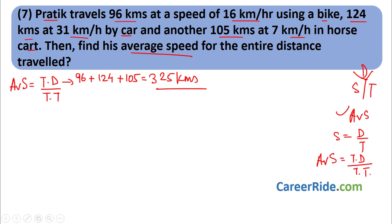Total distance = 96 + 124 + 105 = 325 km. For total time, find time taken for each leg using Time = Distance ÷ Speed. T1 (bike) = 96/16 = 6 hours. T2 (car) = 124/31 = 4 hours. T3 (horse cart) = 105/7 = 15 hours. Total time = 6 + 4 + 15 = 25 hours.